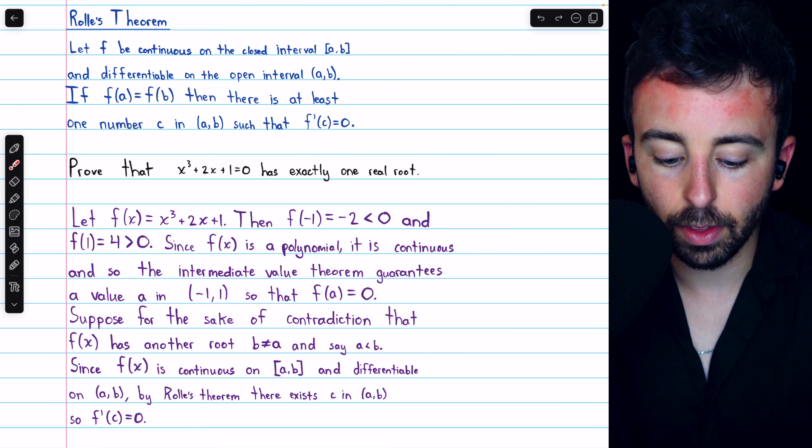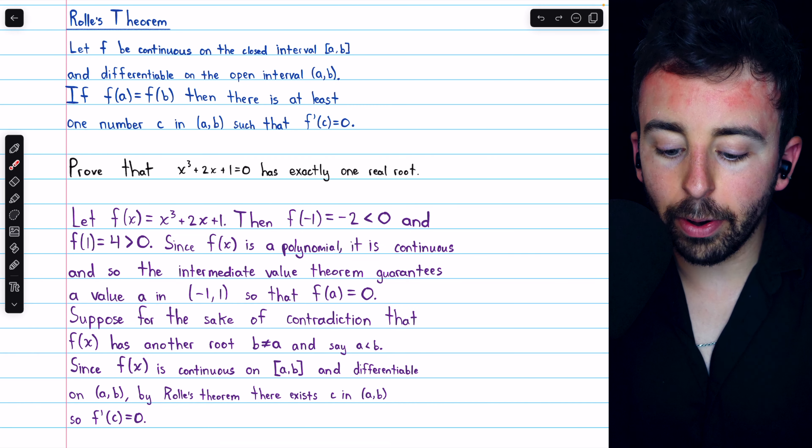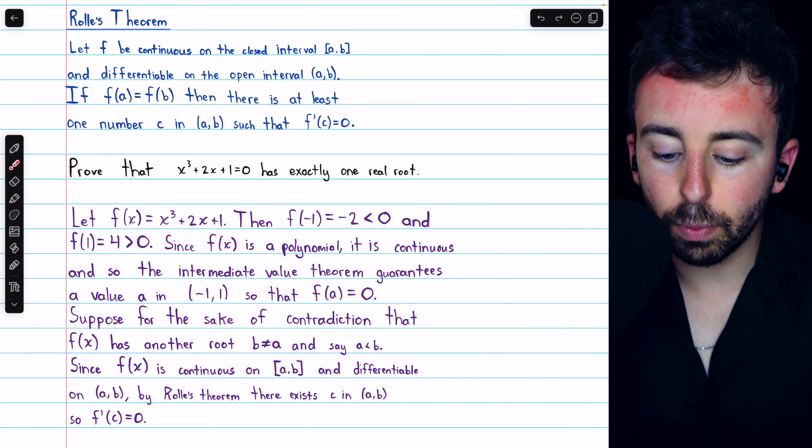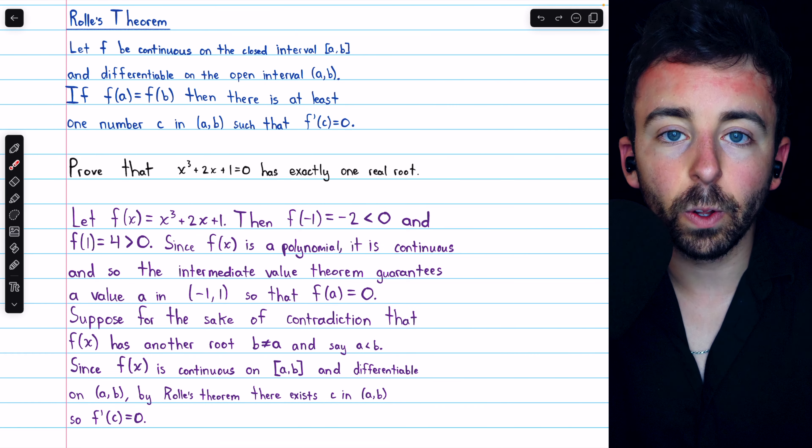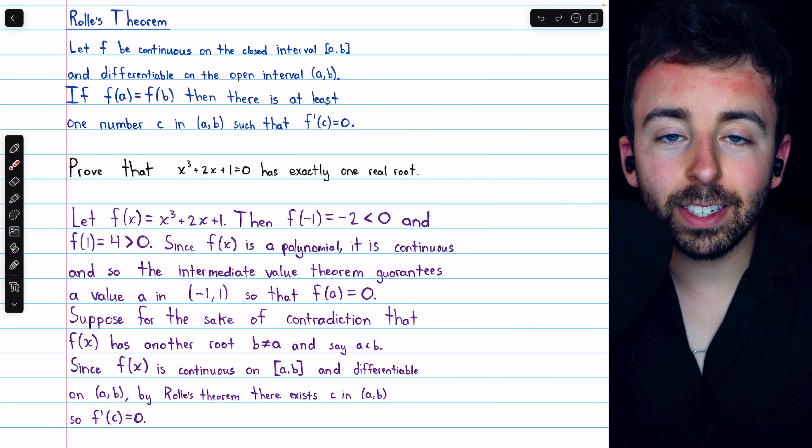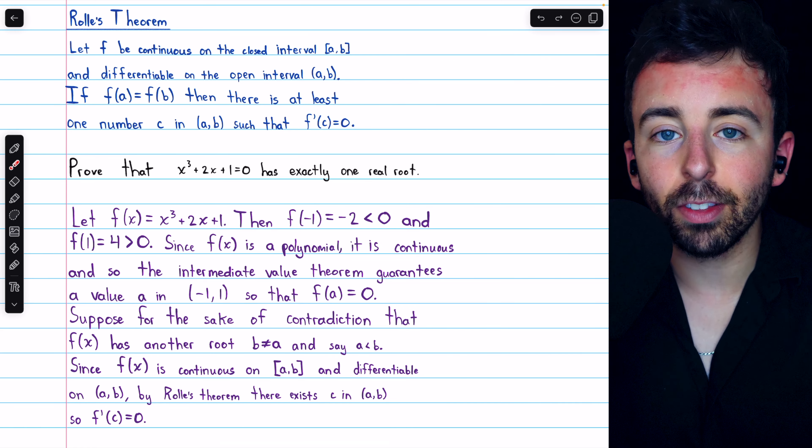So, we can apply Rolle's theorem to conclude there exists a number c between a and b, so that f prime of c is equal to zero. Rolle's theorem guarantees this must be true, a point at which the derivative is zero.